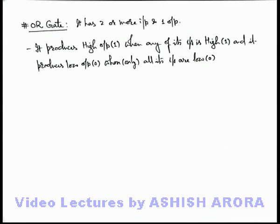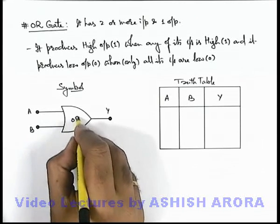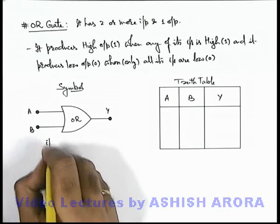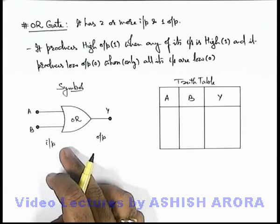Let's have a look at the symbol and truth table of an OR gate. This is the symbol we use for an OR gate, in which there are 2 terminals at input and 1 terminal at the output. It can also be of more than 2 input terminals.